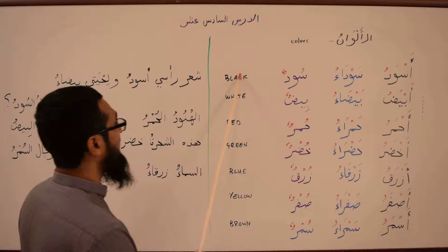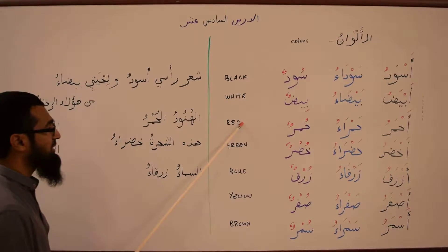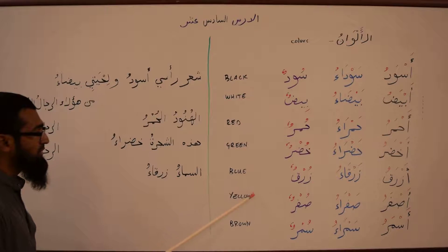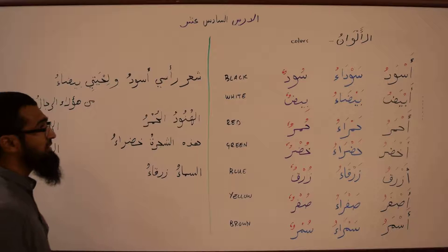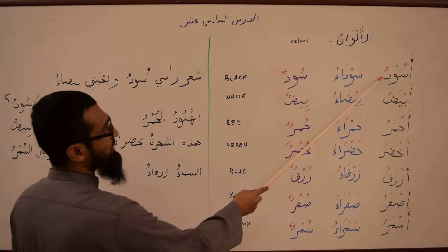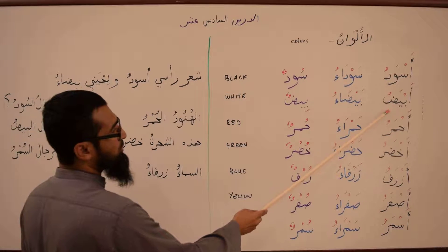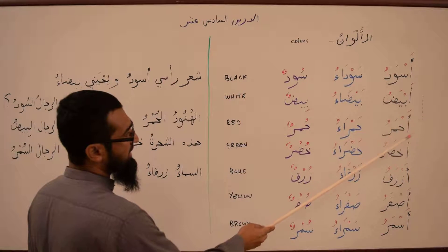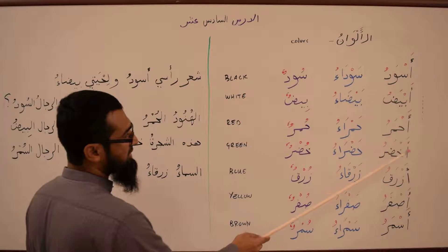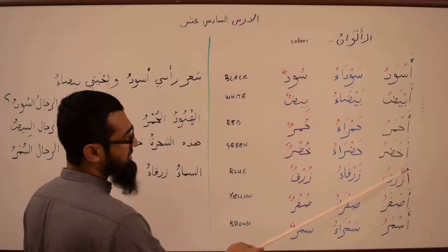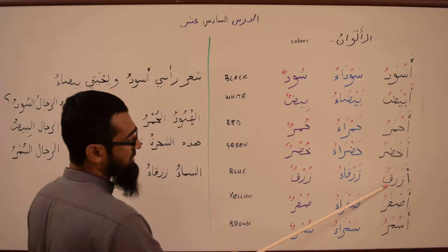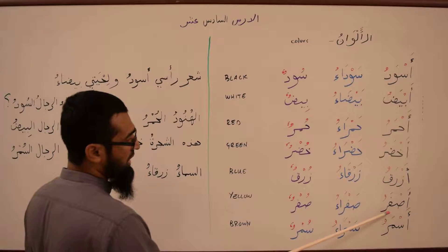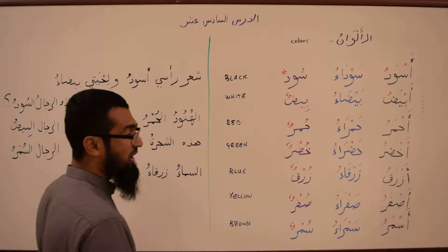So it's black, white, red, green, blue, yellow, brown, right? Aswad is black, Abiyad is white, Ahmar is red, Akhdar is green, Azraq is blue, Asfar is yellow, Asmar is brown.